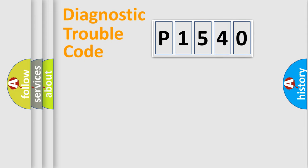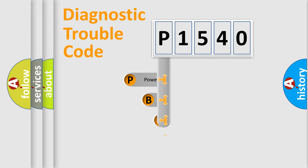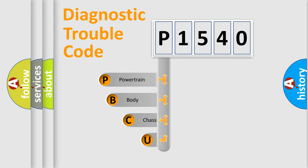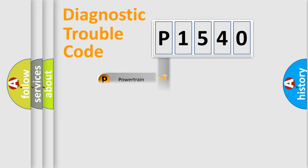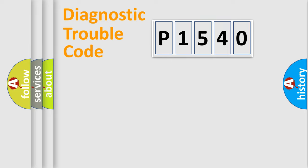First, let's look at the history of diagnostic fault code composition according to the OBD2 protocol, which is unified for all automakers since 2000. We divide the electrical system of the automobile into four basic units: Powertrain, Body, Chassis, and Network.